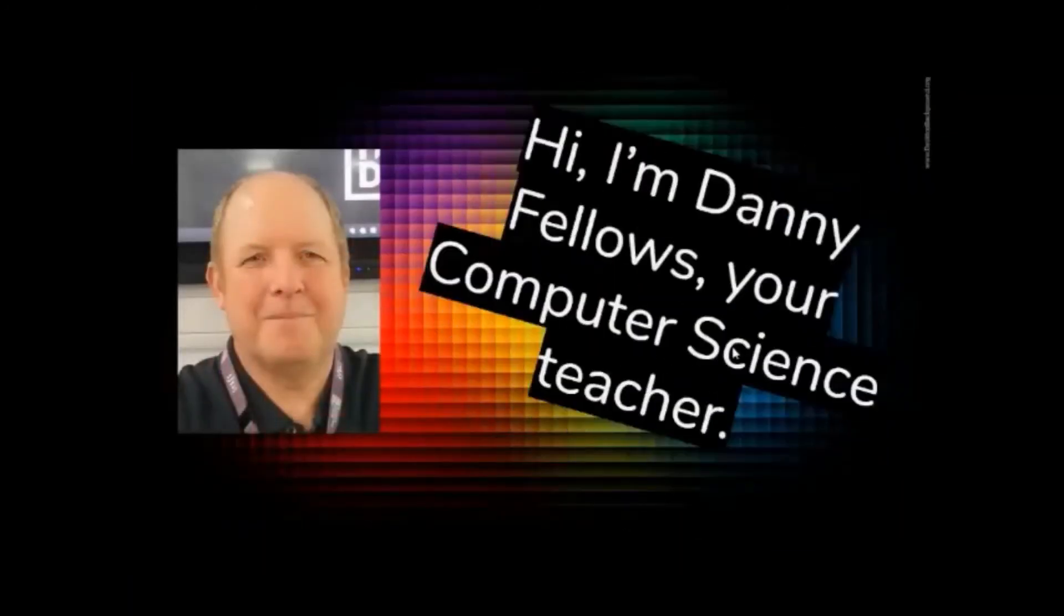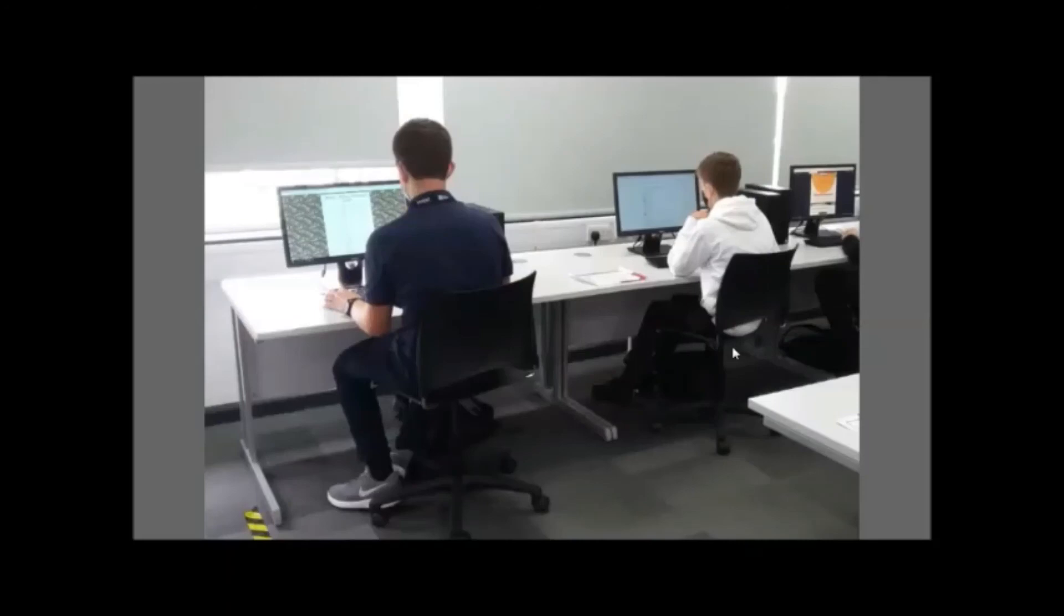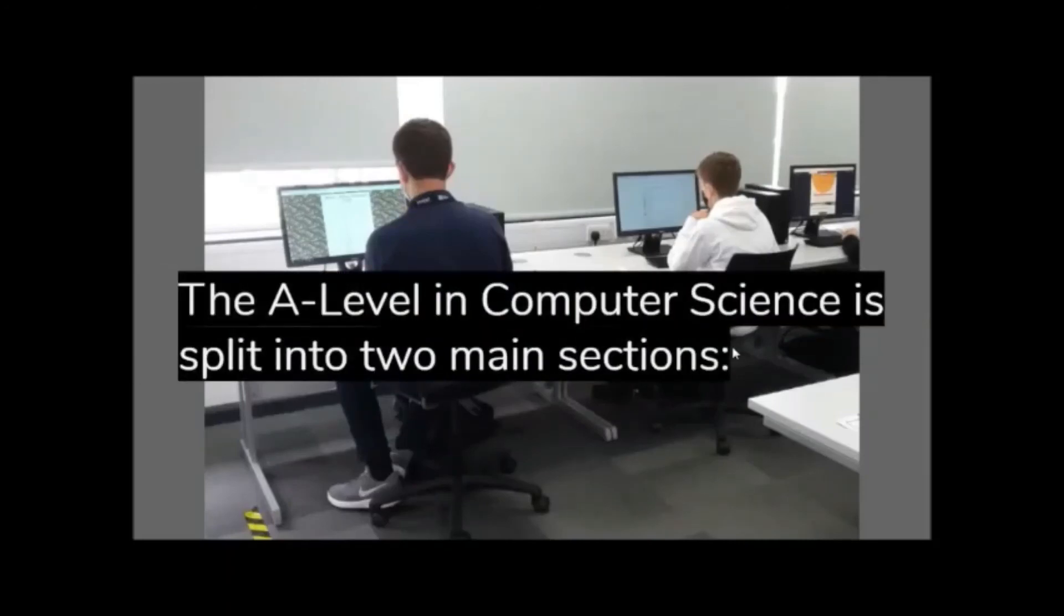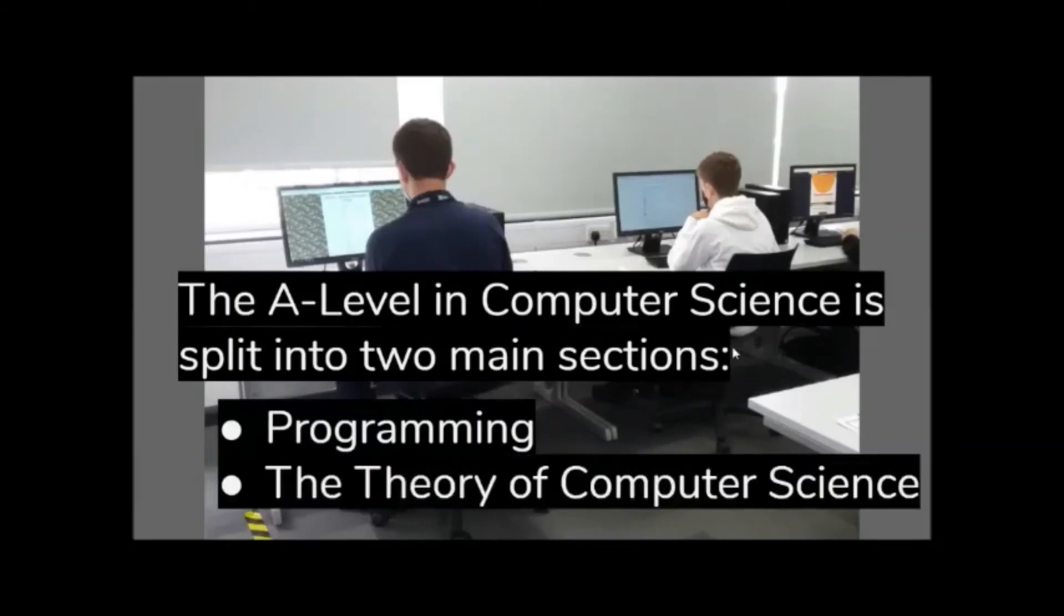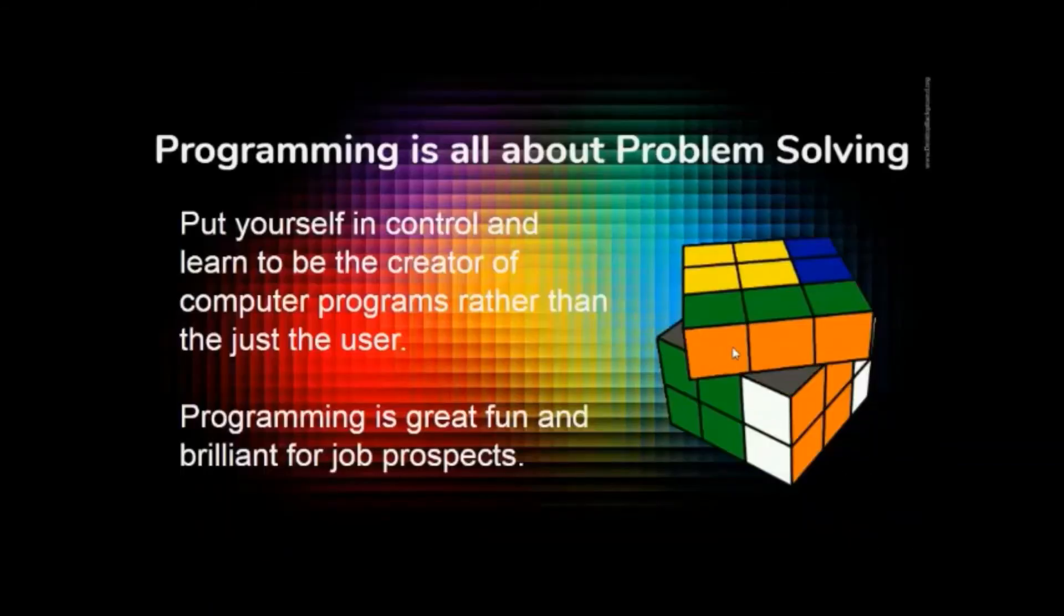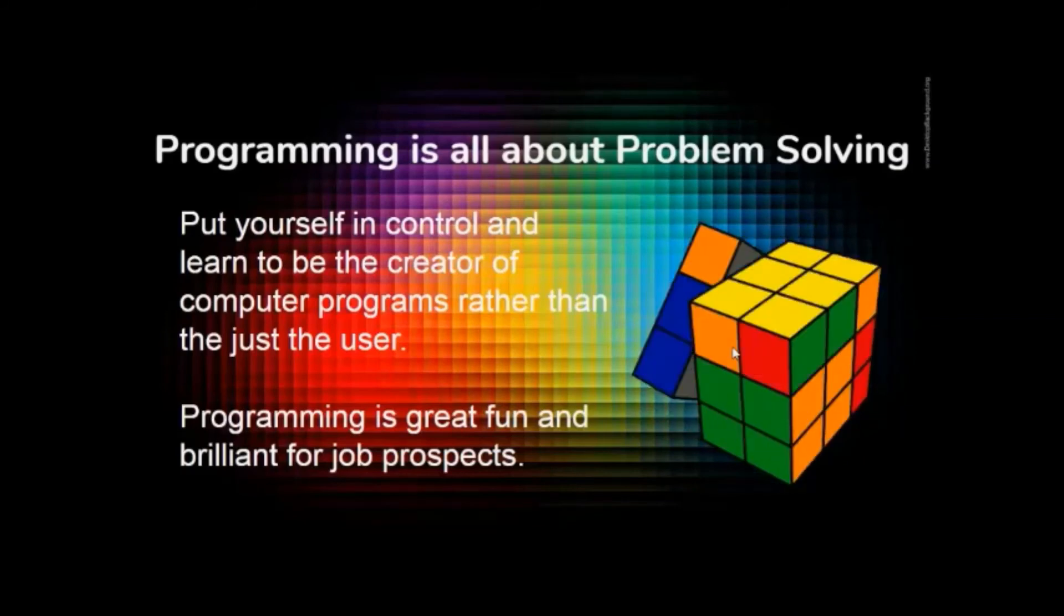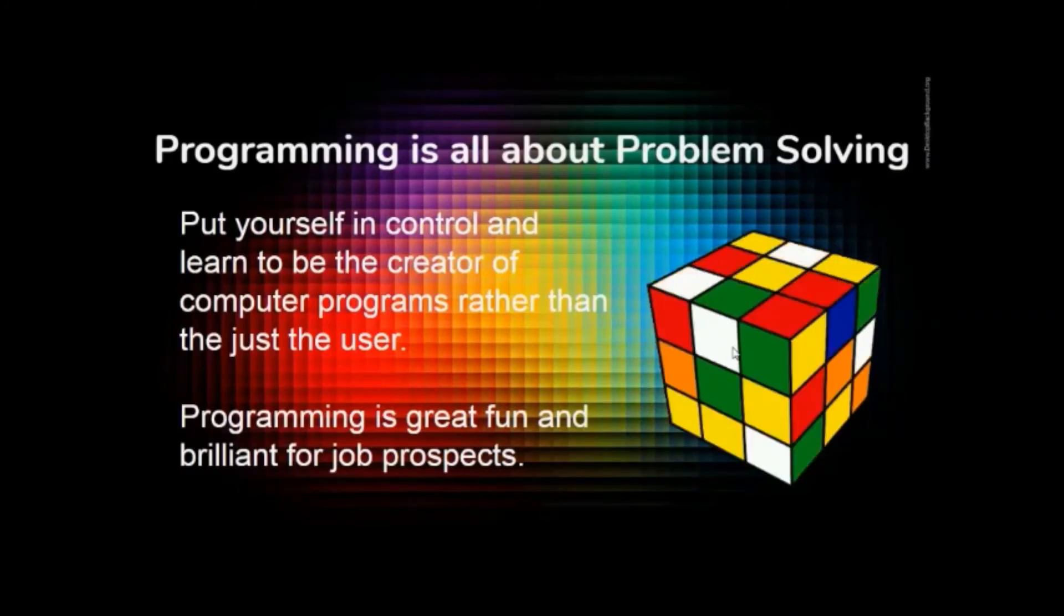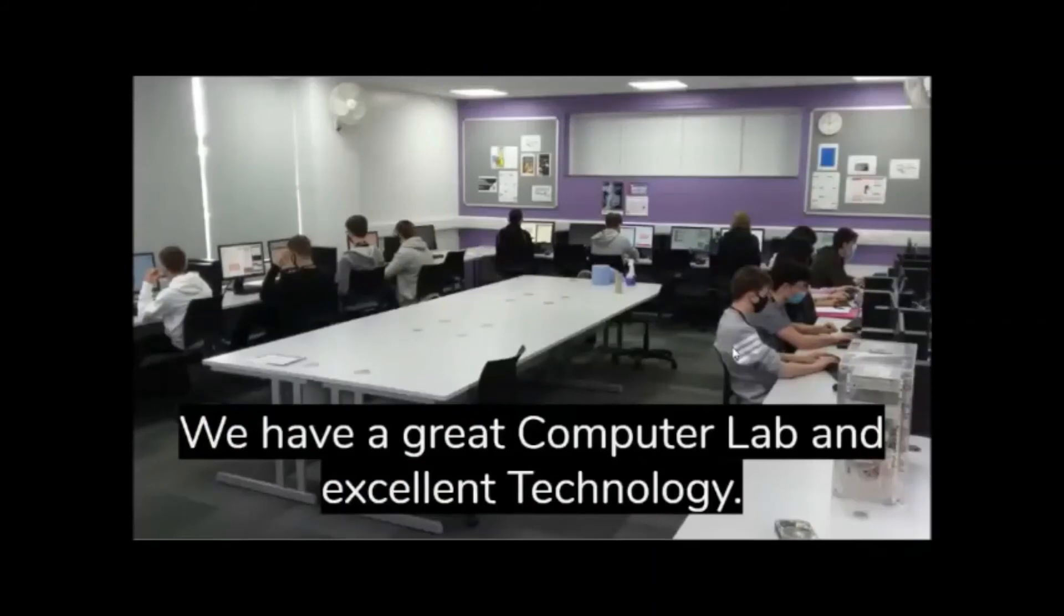Hi, I'm Danny Fellows, your computer science teacher. The A-Level in computer science is split into two main sections. Programming and the theory of computer science. Programming is all about problem solving. Put yourself in control and learn to be the creator of the computer programs rather than just the user. Programming is great fun and brilliant for job prospects. We have a great computer lab and excellent technology. There are 20 computers in the room, so that's a maximum of 20 students in each class.